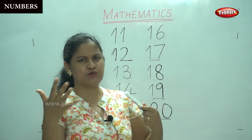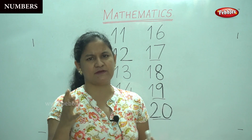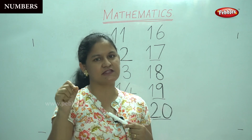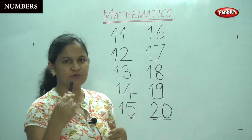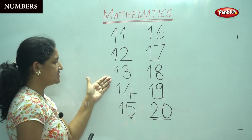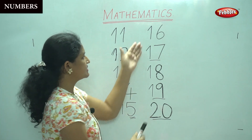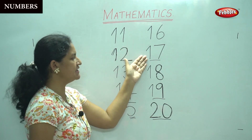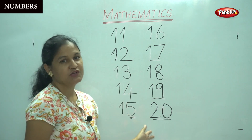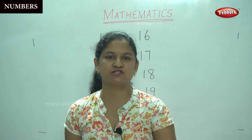So I hope now you are quite familiar with writing the numbers. No problem, it will come as you practice and you will be able to write the numbers. So shall we say the numbers? 11, 12, 13, 14, 15, 16, 17, 18, 19, 20. So today we have learned numbers 0 to 20.